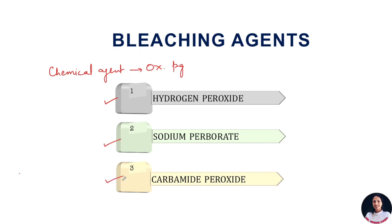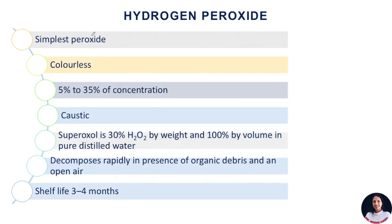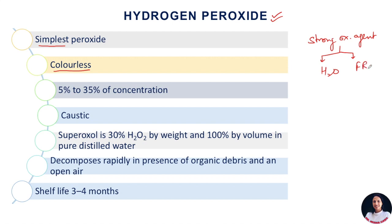We will discuss all these agents in detail now. First of all, we will discuss hydrogen peroxide. It is the simplest peroxide and is a colorless liquid in its pure form. Hydrogen peroxide is a very strong oxidizing agent, meaning it easily dissociates into water and free radicals. These free radicals are basically responsible for lightening of the color of the teeth.